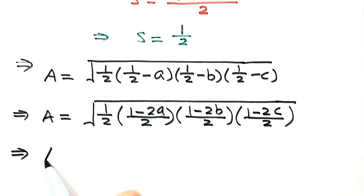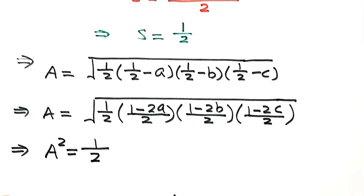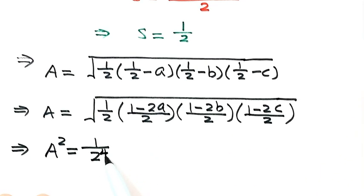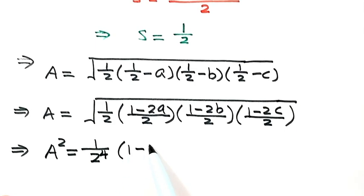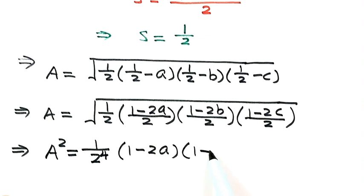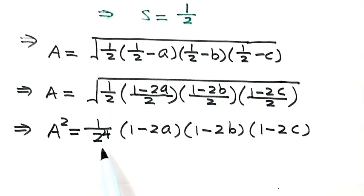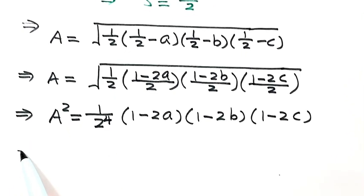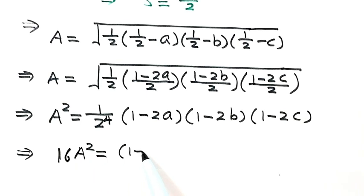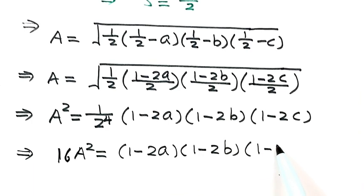Next, square both sides. Then A squared equals 1 over 2 to the fourth, times (1 minus 2A) times (1 minus 2B) times (1 minus 2C). Multiplying both sides by 16, we get: 16A squared equals (1 minus 2A)(1 minus 2B)(1 minus 2C).